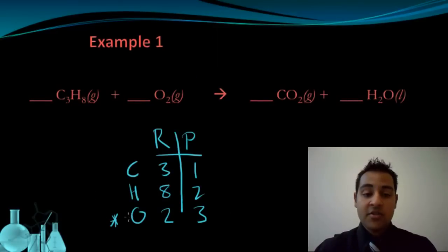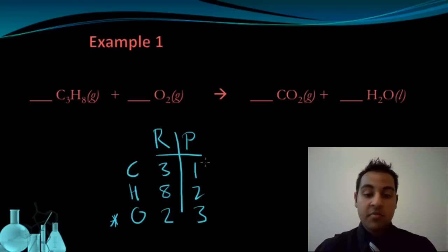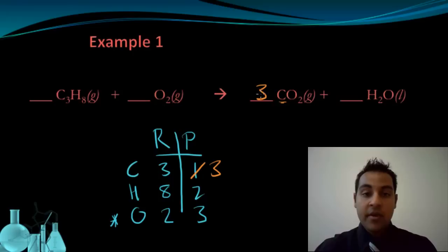Now that I know I'm going to do the oxygen last, I can choose to either balance the carbon or the hydrogen — this is arbitrary, so I'm just going to start with carbon. I have three on the reactant side and one on the product side, so I need to multiply the product side carbons by three. I do that by writing a coefficient in front of the carbon dioxide. That changes my number of carbons to three, but it also changes my oxygens: three times two is six, plus the one from water gives me a total of seven oxygens on the product side.